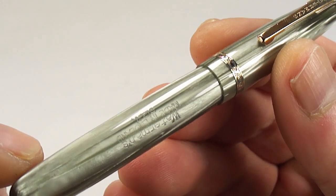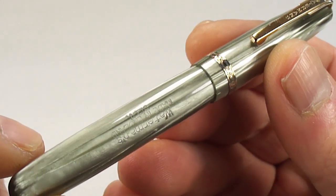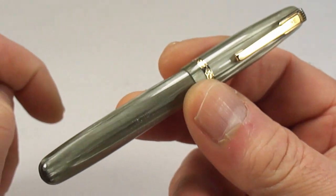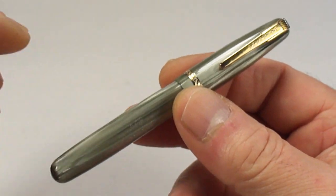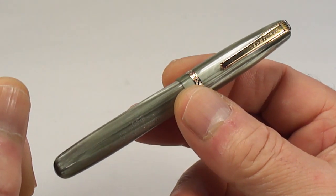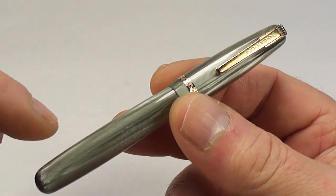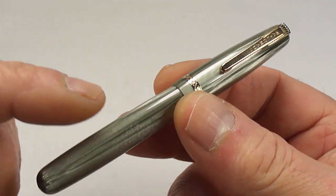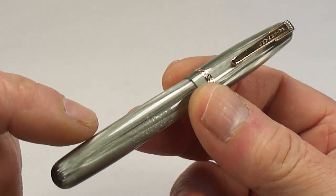As you can see, it comes in this beautiful - this is what they term as the gray pearl color - absolutely beautiful. Now this particular model came in numerous different colors. They came in solid colors, obviously the standard black. They may have come in other colors as well in just standard colors.